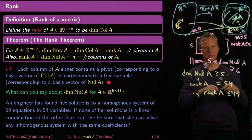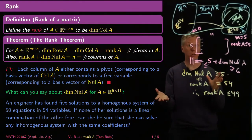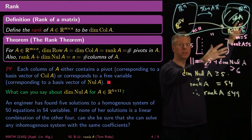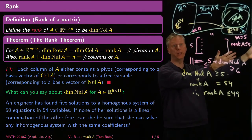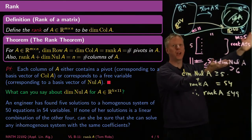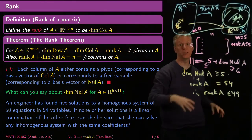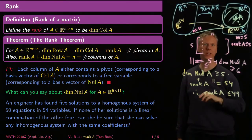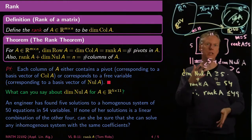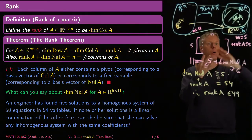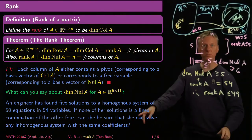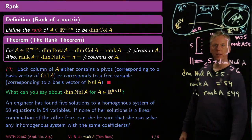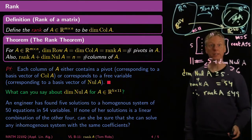If you pick a random vector in 50-dimensional space, the probability it falls into a 49-dimensional subspace is zero. So she can't be sure at all — in fact, the probabilities are against her. Just think of a smaller example: if a matrix maps into R^3 but its column space is a two-dimensional plane, the probability a random point in R^3 lands on that plane is zero. That's how the rank theorem comes up in various kinds of problem solving.